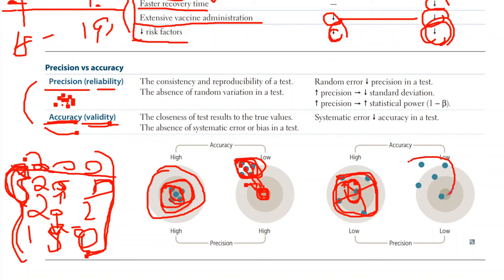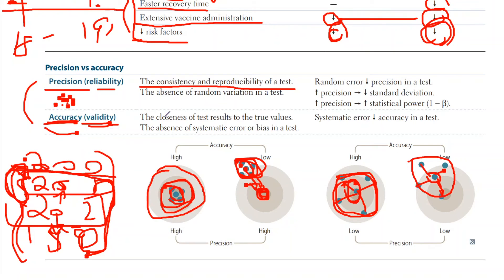In this last example, the points are dancing very far from the middle point — not accurate — and they're also widely spaced from each other — not reliable. So: precision is the consistency and reproducibility of a test, getting specific values and comparing them with the same test. Validity is comparing those numbers to a standard test and seeing if they're close — the closeness of test results to the true values, obtained using standardized test procedures.